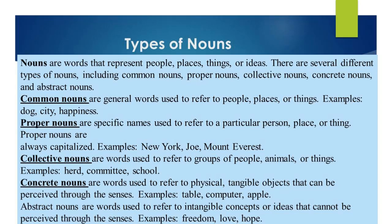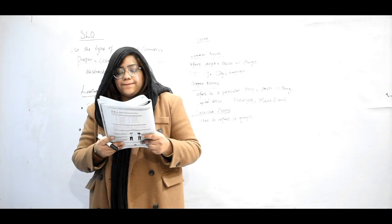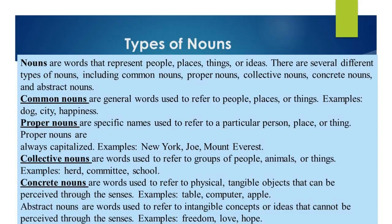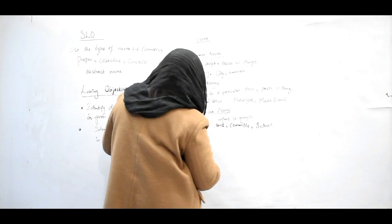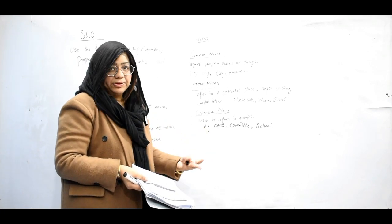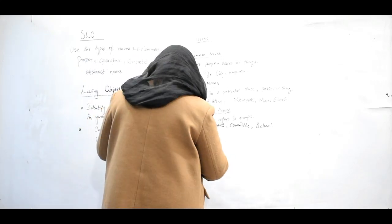Now I am going to discuss collective nouns. Collective nouns are words used to refer to groups. For example, a group of animals or a group of people. Examples include herd, committee, and school. These words refer collectively to a number of persons or a group of people, so they are called collective nouns.